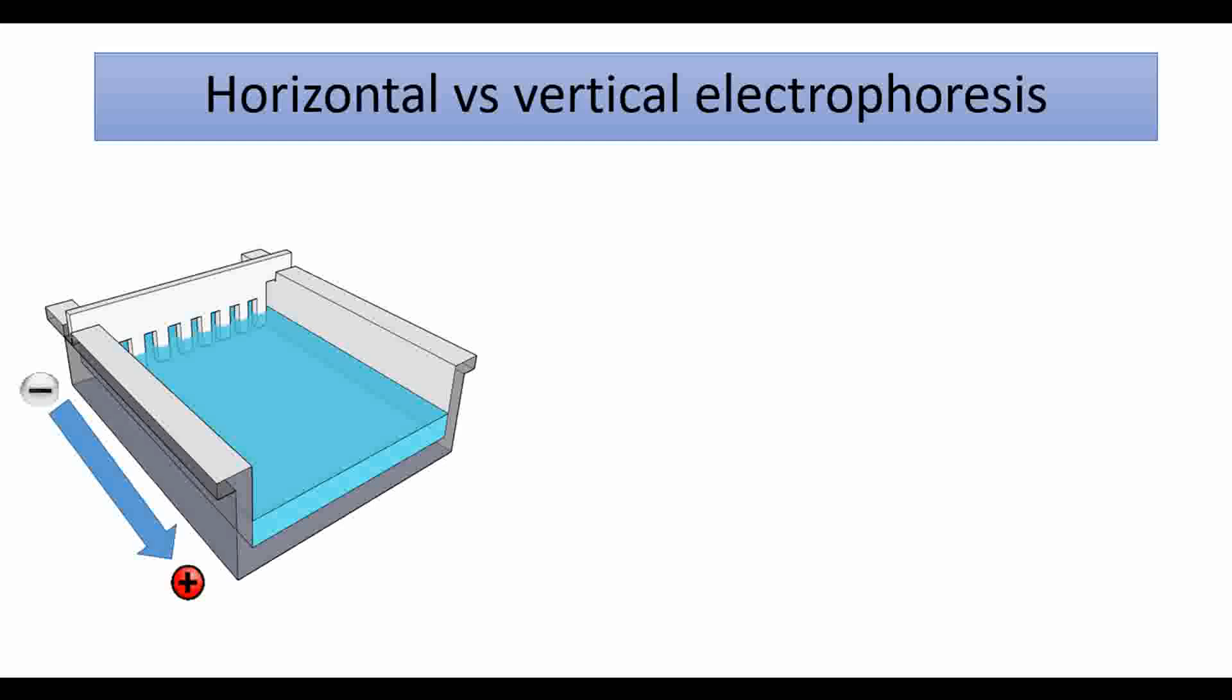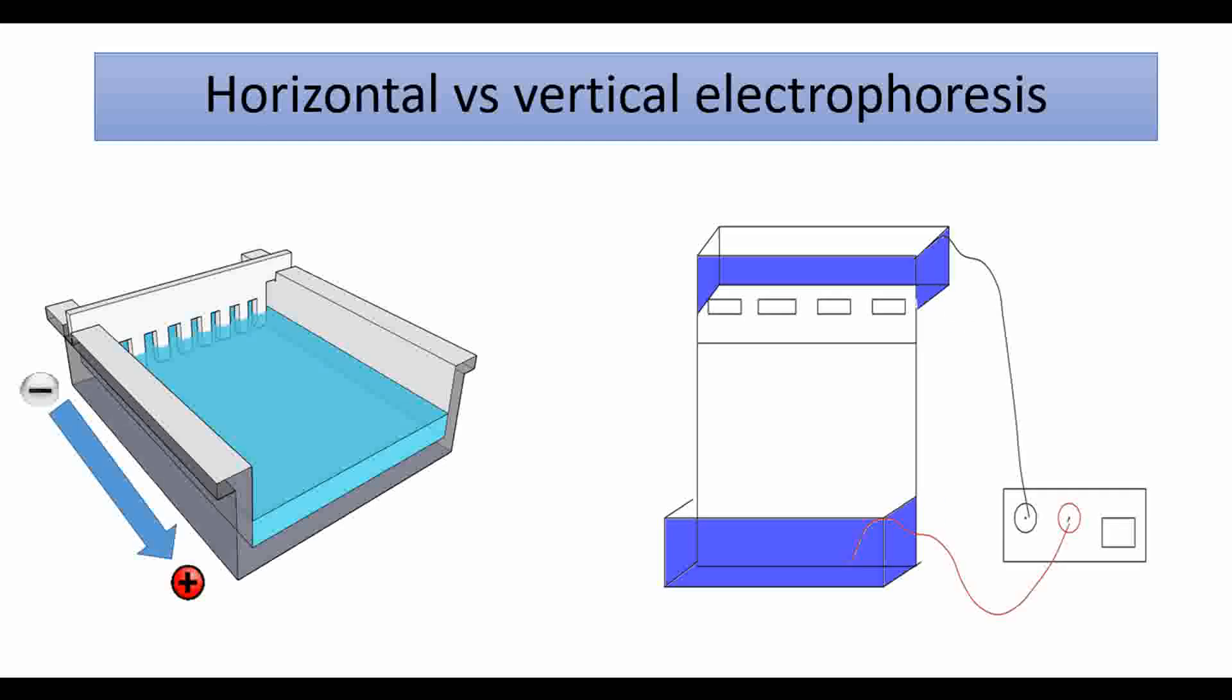On the other hand, vertical electrophoresis shows some differences. It enables us to make two different gels in terms of pH and gel concentration. This is known as discontinuous gel electrophoresis, whereas horizontal gel electrophoresis always shows the continuous gel electrophoresis system.